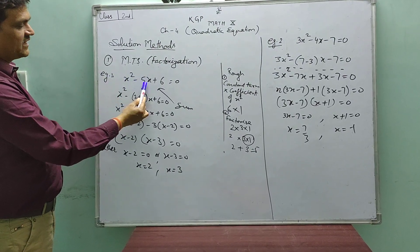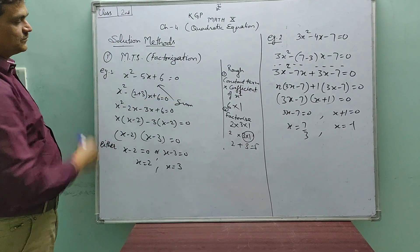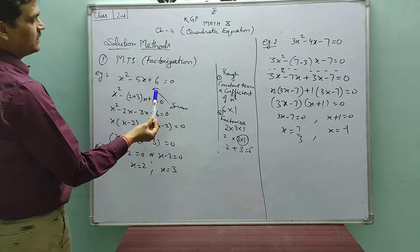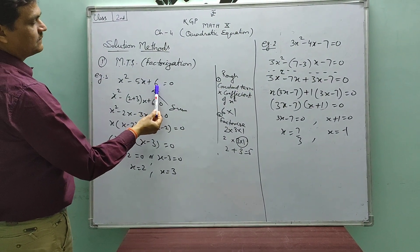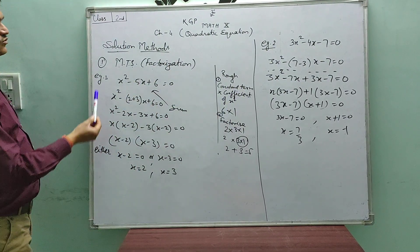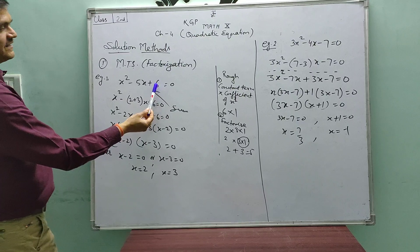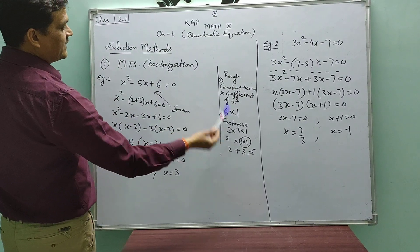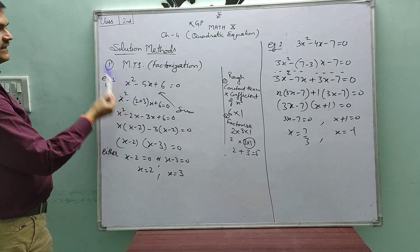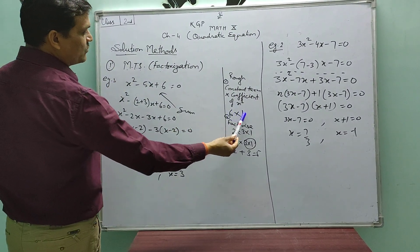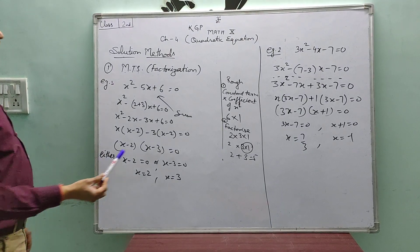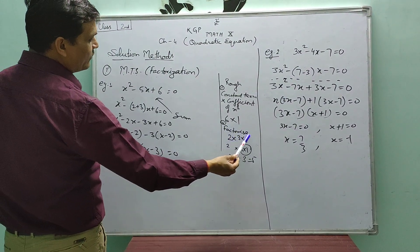The first example is x squared minus 5x plus 6 equals to 0. First of all, on the right-hand side, we have to write the constant term multiplied by the coefficient of x squared. The constant term is c, which here is 6, and the coefficient of x squared is a, which here is 1. So we write 6 into 1 on the right-hand side. Now we have to factorize that: 2 into 3 into 1.